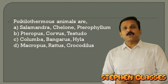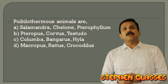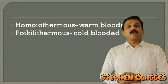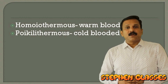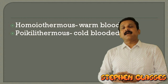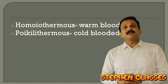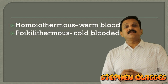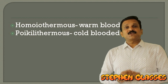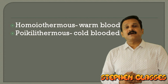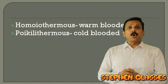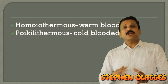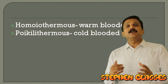Moving on to poikilotherms. You should know about poikilothermy and homeothermy. Homeothermous animals are warm-blooded; poikilothermous animals are cold-blooded. Among vertebrates, birds and mammals are warm-blooded, while fishes, amphibians, and reptiles are cold-blooded. Questions frequently ask you to identify homeothermous or poikilothermous animals from a list.